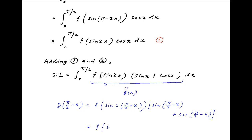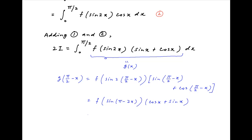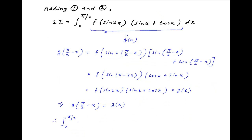This equals f of sine(π minus 2x) multiplied by (cos x plus sin x). Since sine(π minus 2x) equals sine 2x, the value of g(π/2 minus x) equals f of sine 2x multiplied by (sine x plus cos x), which is equal to g(x). Therefore, we have established that g(π/2 minus x) equals g(x), and using a property of definite integrals, integral 0 to π/2 of g(x) dx equals 2 times integral 0 to π/4 of g(x) dx.